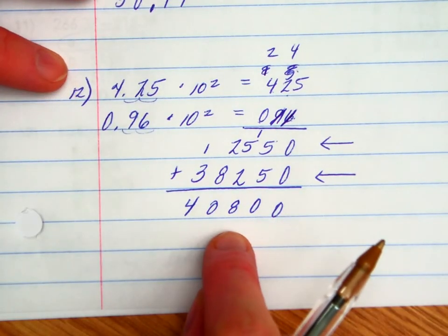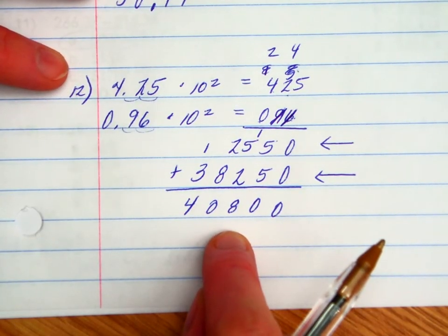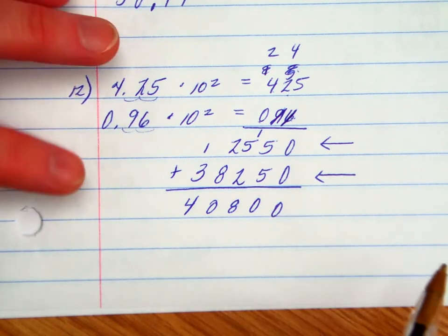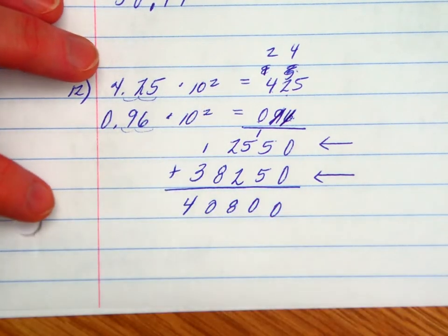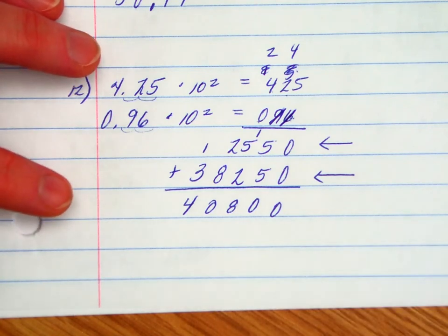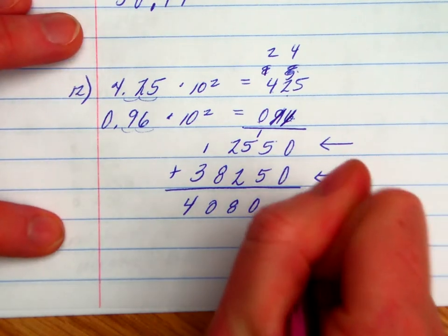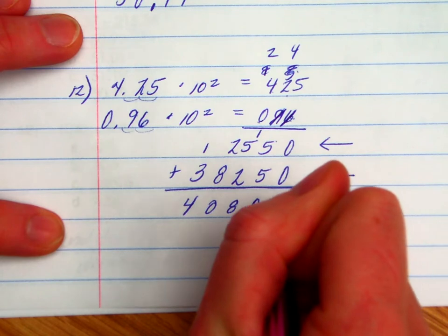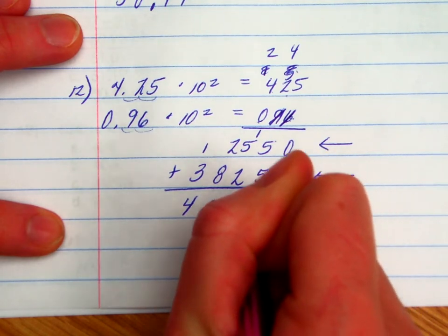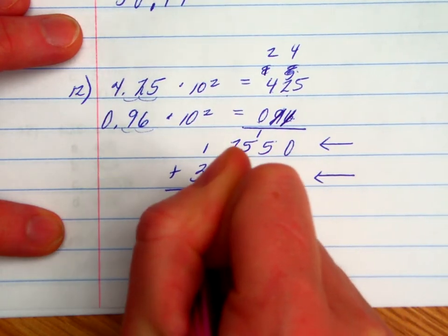And we need to figure out where the decimal is going to go. I had to multiply by 10 to the second power twice, so that means I need to divide by 10 to the second power twice. So divide by 10 to the first power, second power, third power, fourth power.